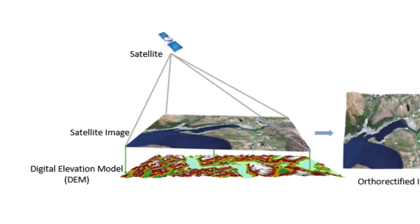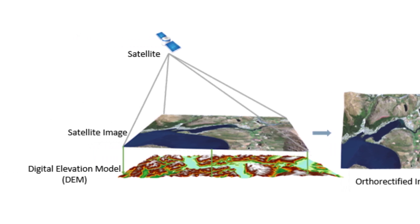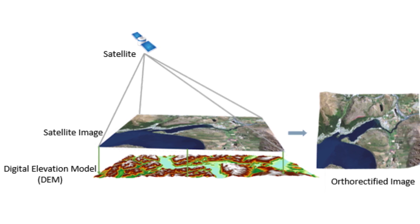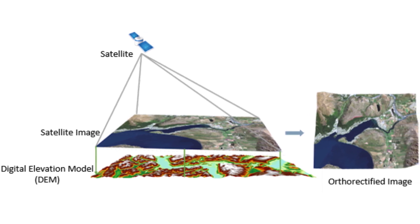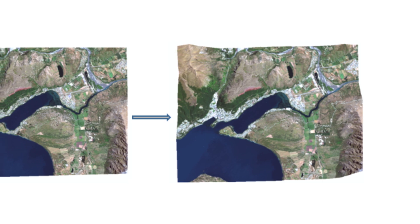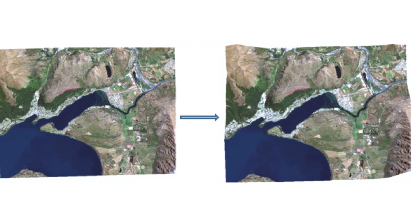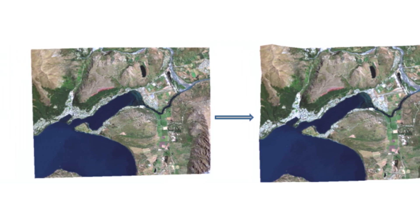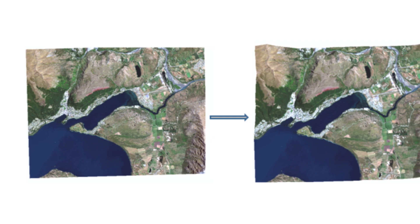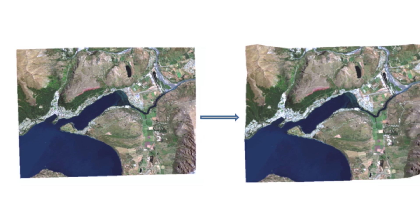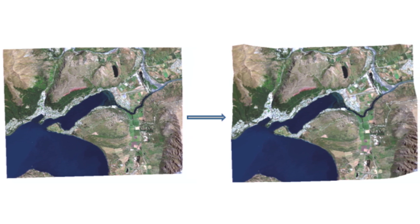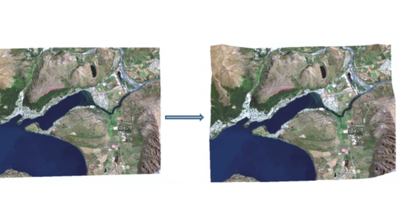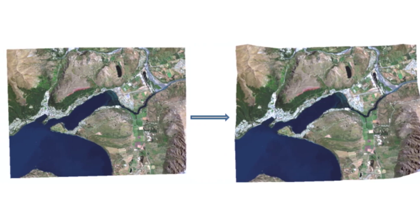Publishing output directly as an image service. Method three: using the geoprocessing tool method saves the output to BIL, BIP, BMP, BSQ, DAT, ESRI Grid, GIF, IMG, JPEG, JPEG 2000, PNG, TIFF, or any geodatabase raster dataset.